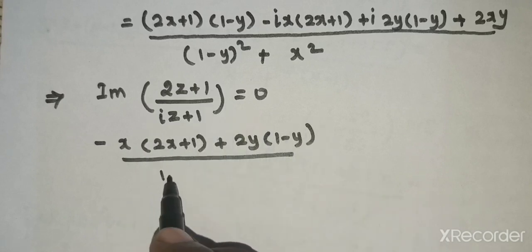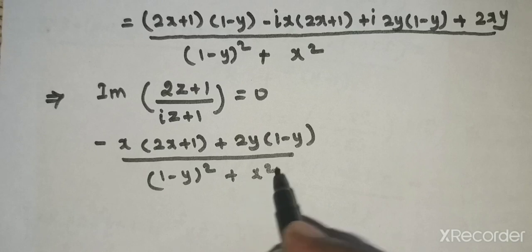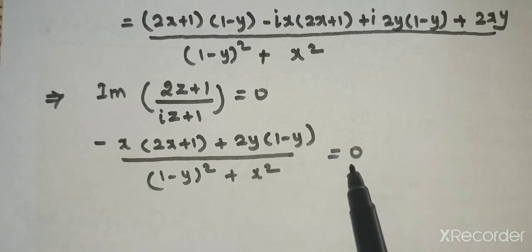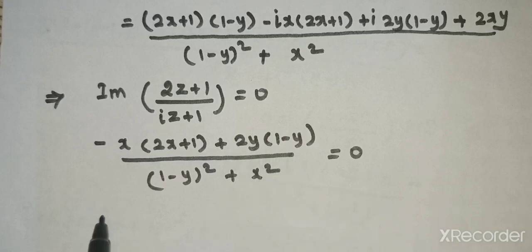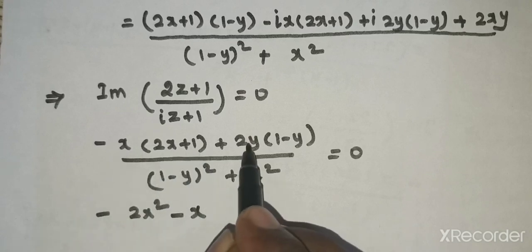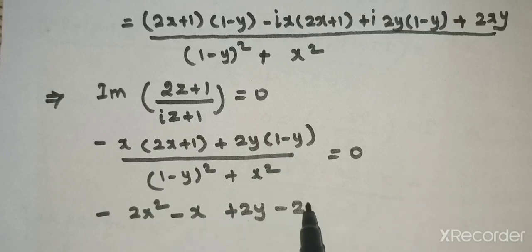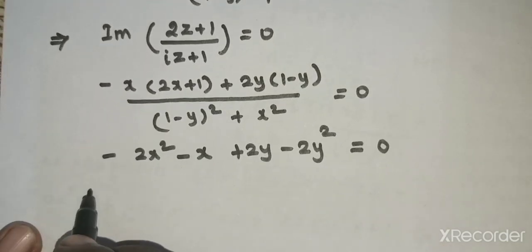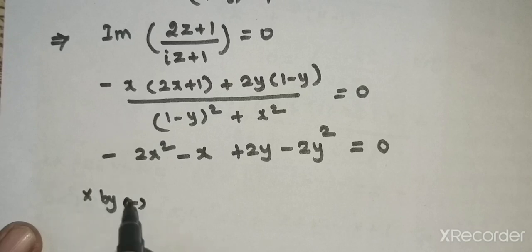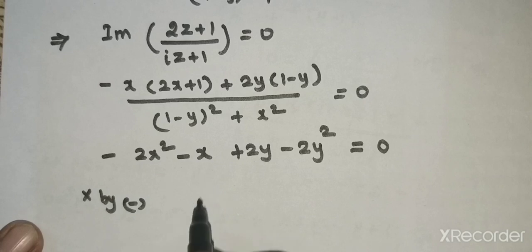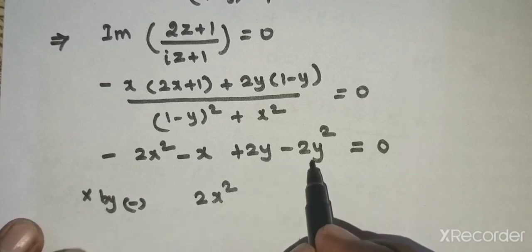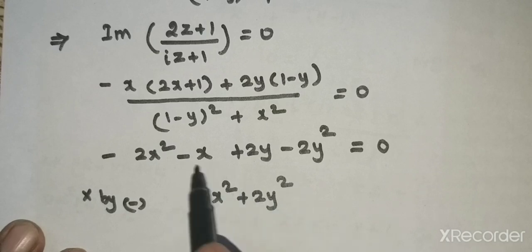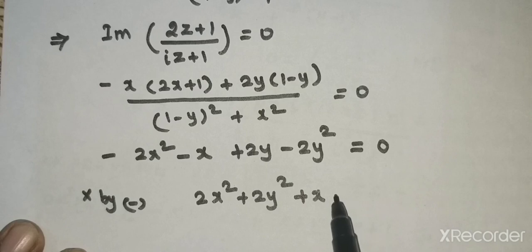Setting the imaginary part equal to 0 over the denominator 1 minus y squared plus x squared: expanding gives 1 minus y squared minus x times 2y and 2y minus 2y squared equal to 0.